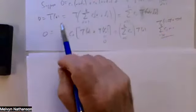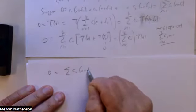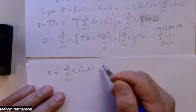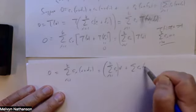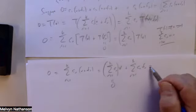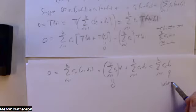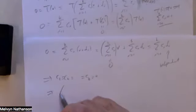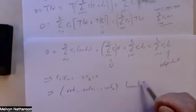Going back to where we started: zero equals the summation of C sub i times (V plus F sub i), from i equals one to k. This equals the summation of C sub i times V, plus the summation of C sub i times F sub i. We just showed the first sum is zero, so we have the summation of C sub i times F sub i equals zero. But these vectors F sub i are linearly independent, so all scalars C sub i must be zero — which means the set {V plus F1, V plus F2, ..., V plus Fk} is linearly independent.